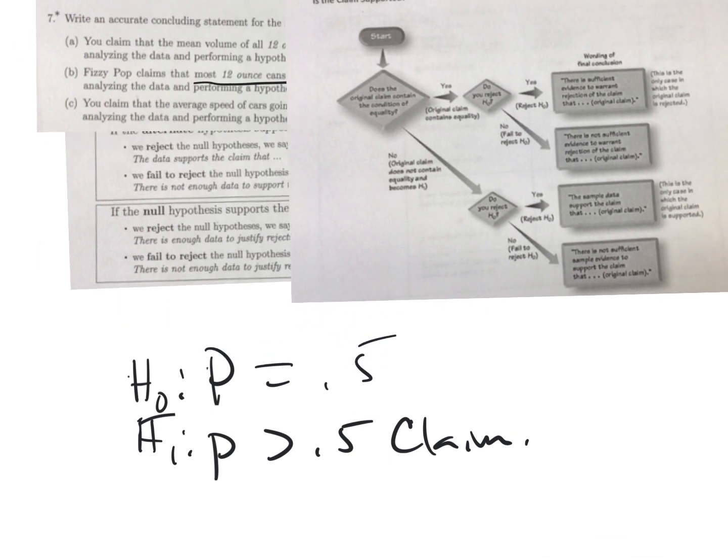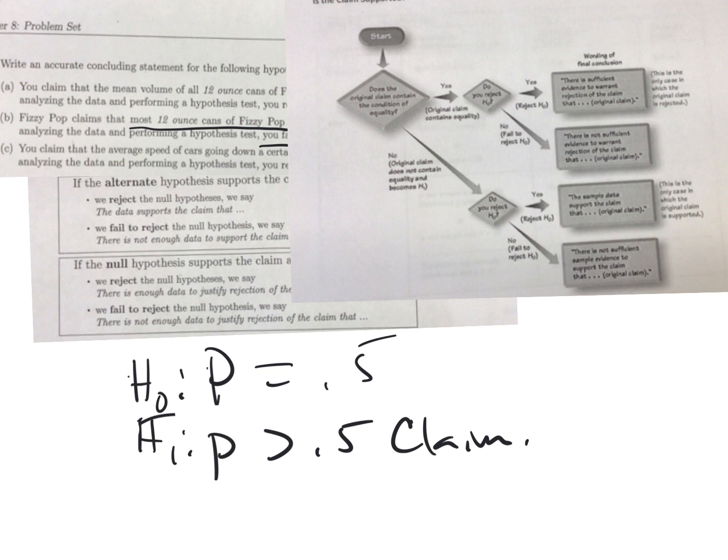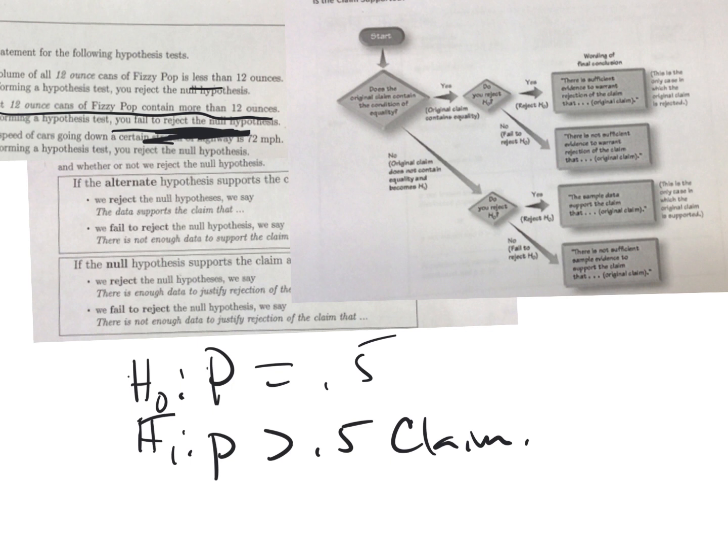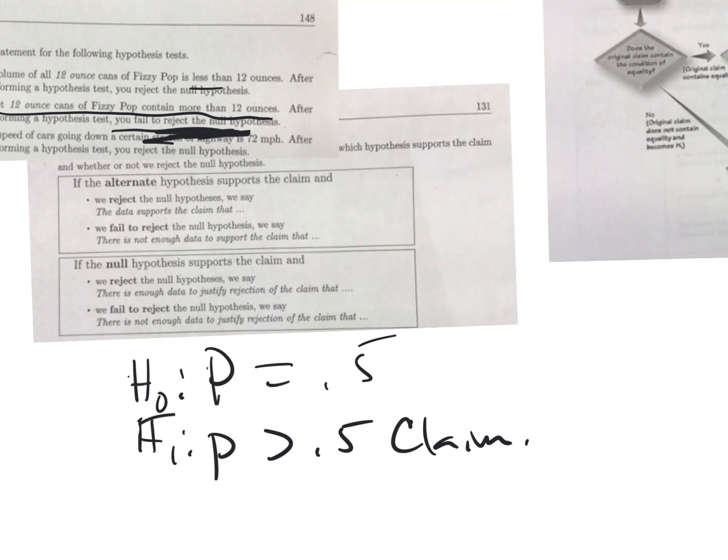Thinking back to the one we just did about the mean volume of all 12-ounce cans being less than 12 ounces - in that case, H1 was the claim and we did reject the null hypothesis, so the sample data supports the claim. See, that's very similar, the only difference is they use the word 'sample' there. Either one works, I really like the flowchart because I get that visual, but Dr. Stevens' method works once you decide which is the claim and write it next to it.